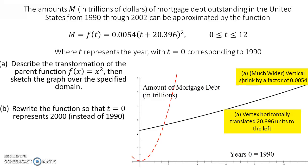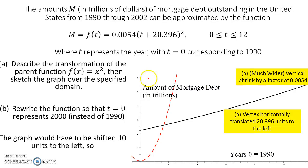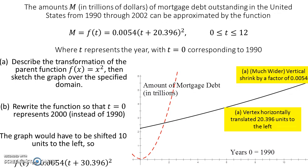Part B asks: what if instead of using year 0 as 1990, we use year 0 as the year 2000? You could write a function using that as the zero instead. How wide it is won't change, but the translation part will. Since it's translated 10 more years, we add 10 to the shift. When we do that, we end up with f(x) = 0.0054 times the quantity (t + 30.396) squared. That would be the answer to rewriting it using a different base year.